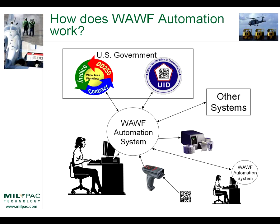Here's a diagram of how a WAF automation system works. The same data fed to WAF can also be fed to other systems like the UID registry. Automated DOD supplier systems use scanned barcode data, automatically generated data, and can interface with label and RFID printers, ERP and finance systems, and allow data sharing with different people in your company to collaborate on shipments. And most importantly, WAF automation systems communicate with Wide Area Workflow.